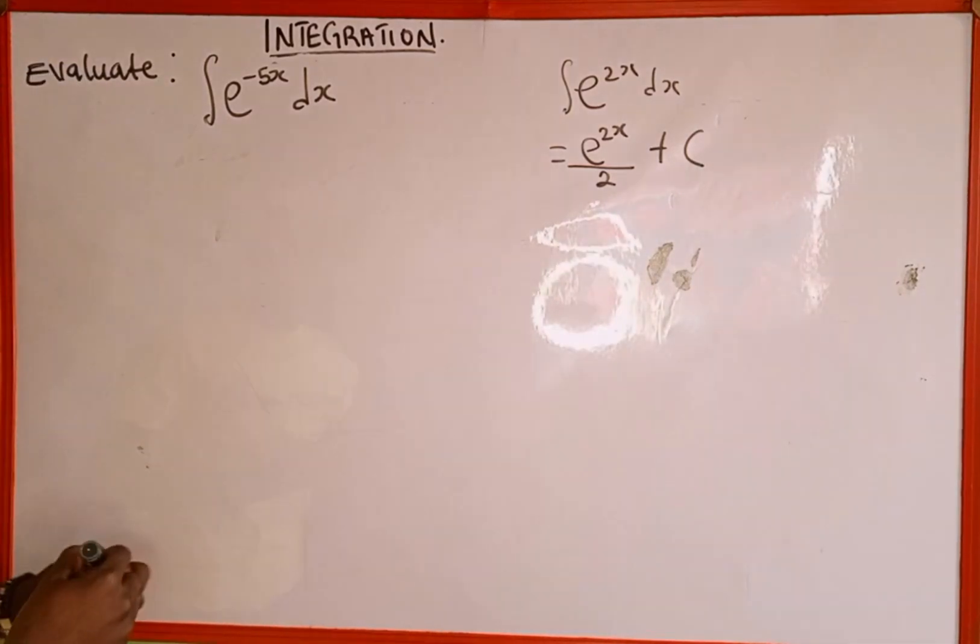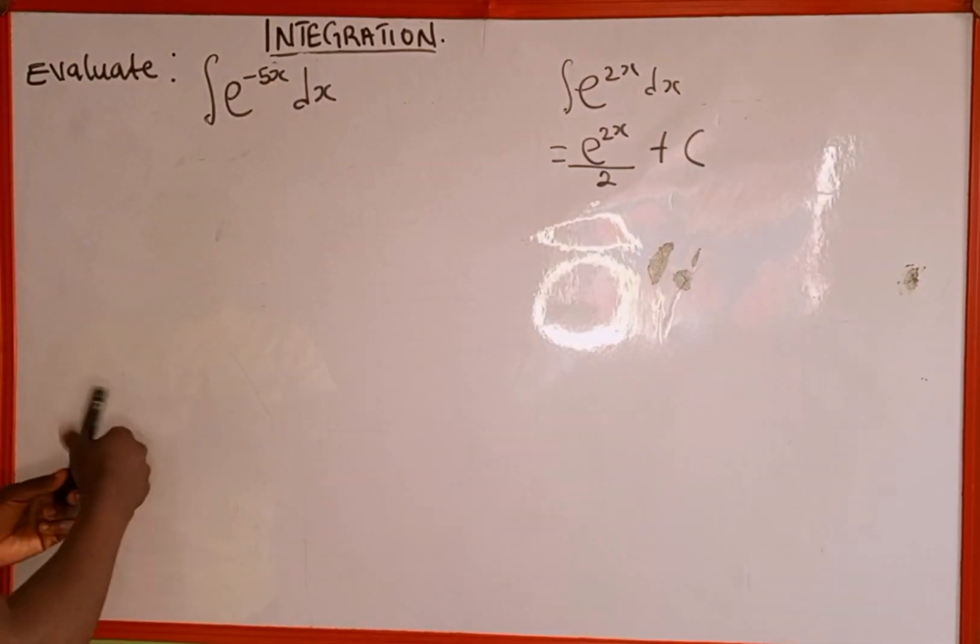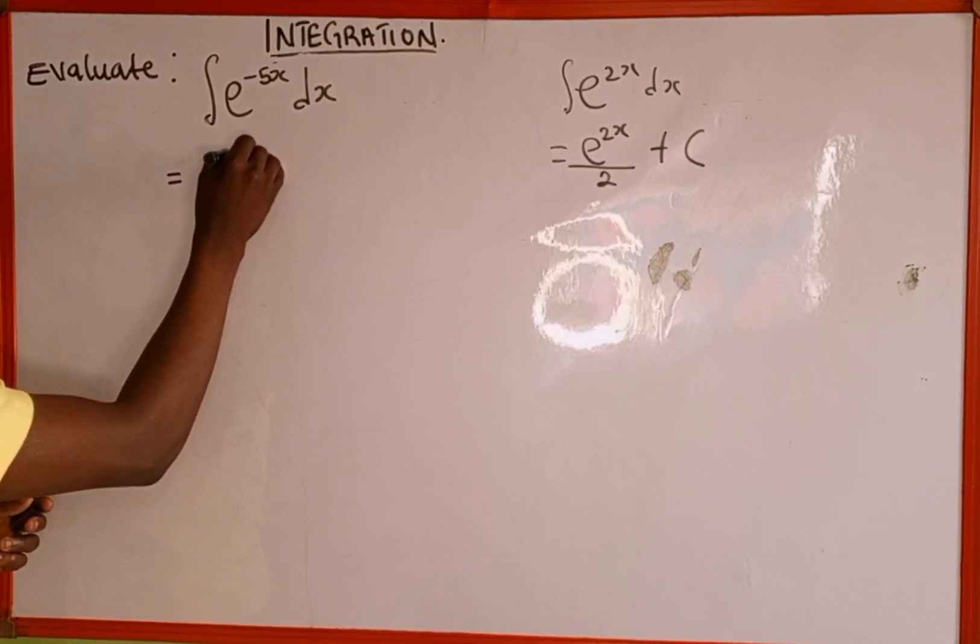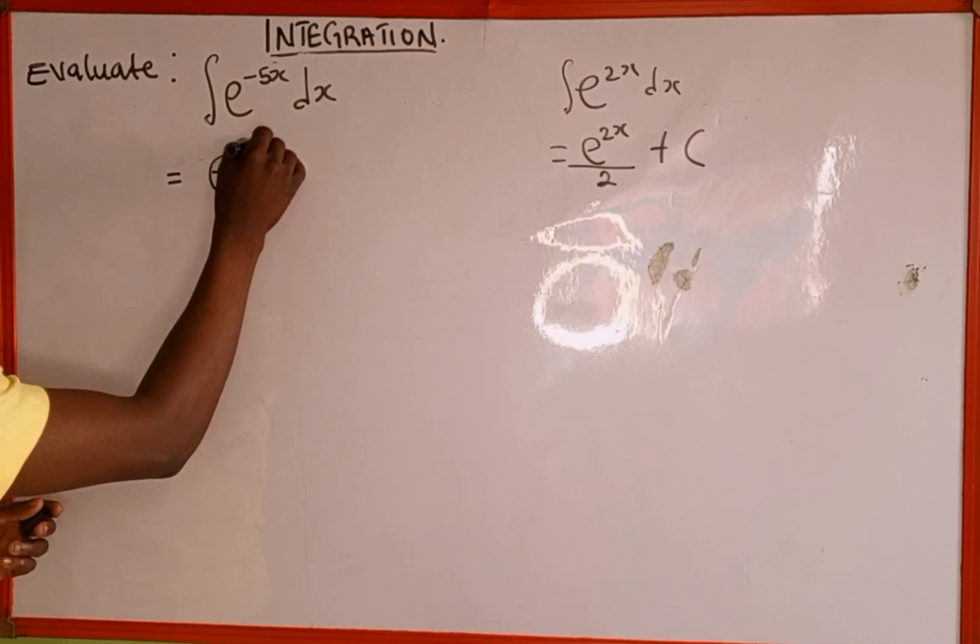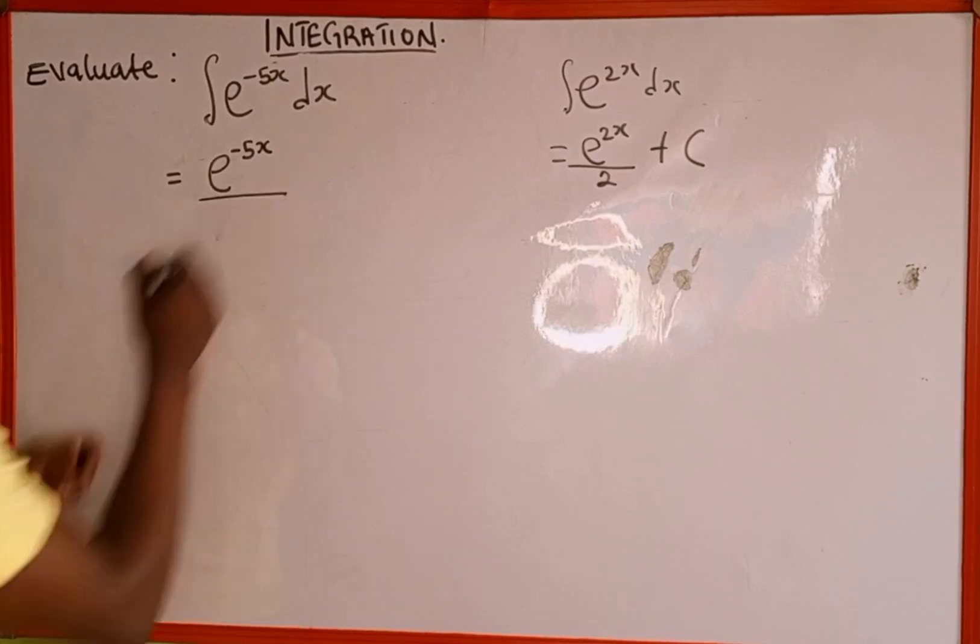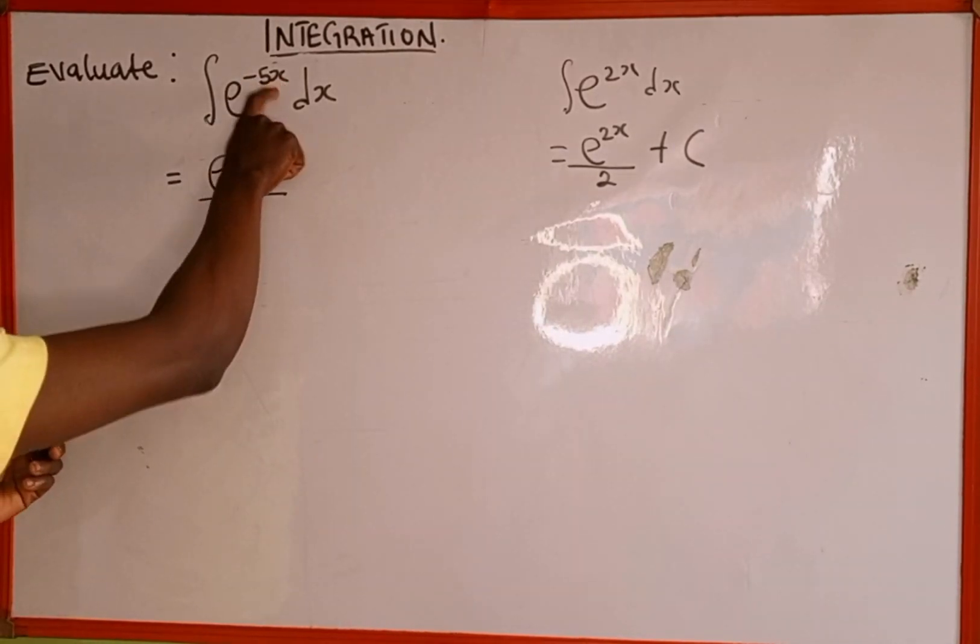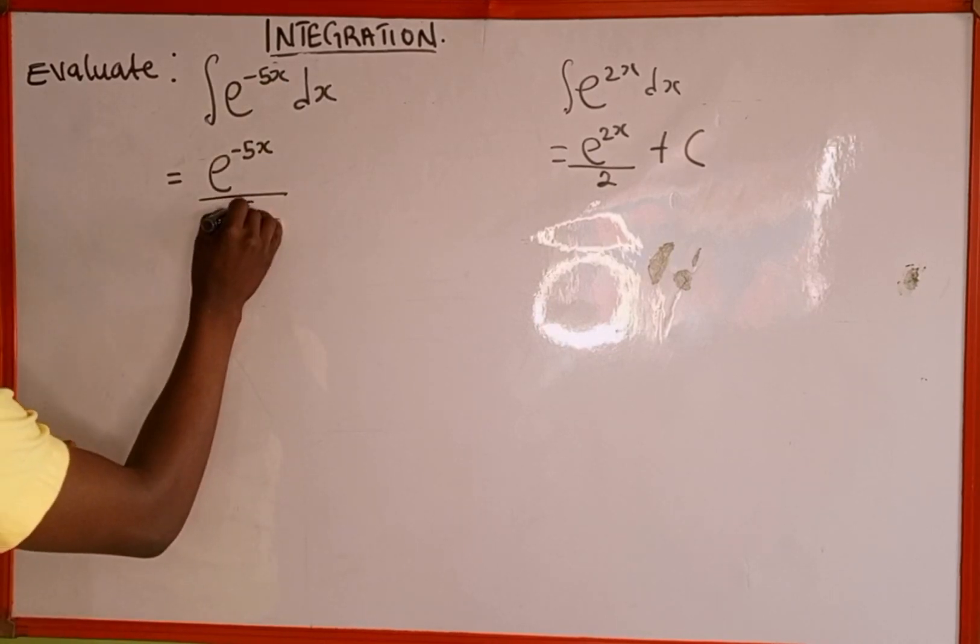So to integrate e^(-5x), we do the same. The function itself, e^(-5x), divided by the derivative of the index. The derivative of -5x with respect to x is -5.